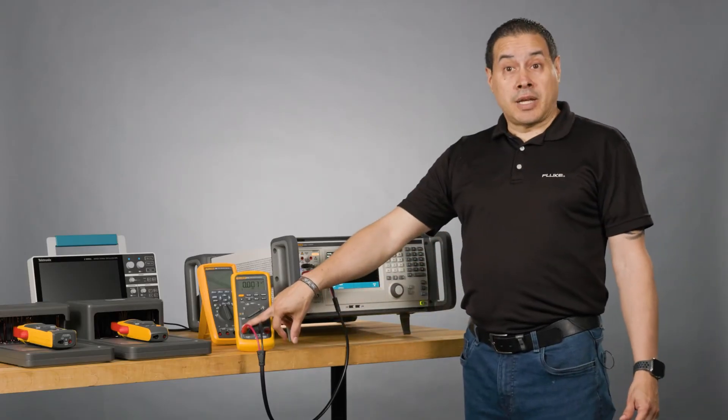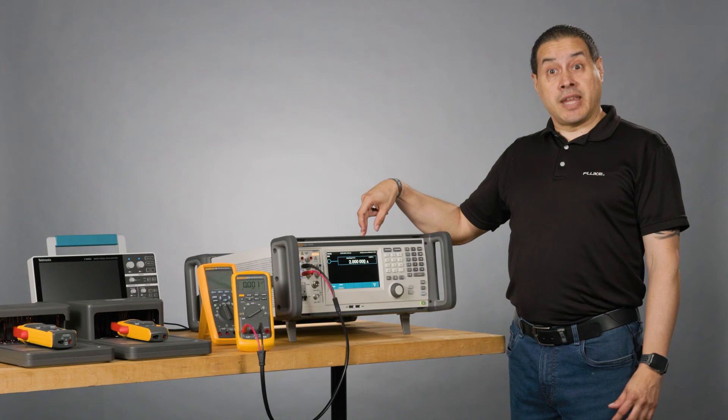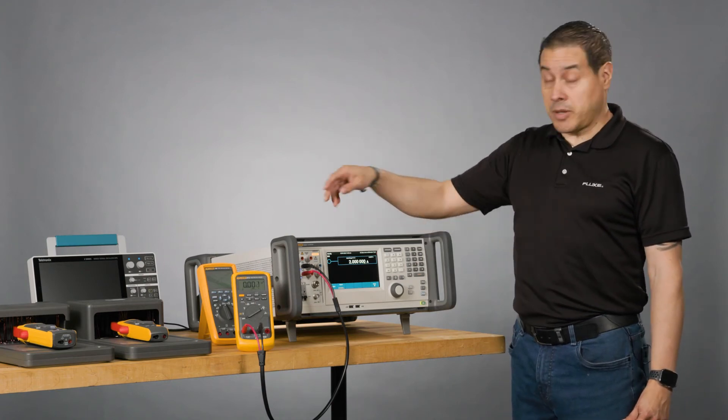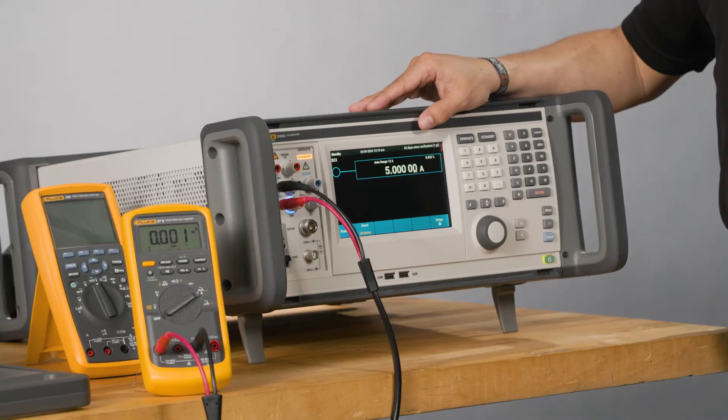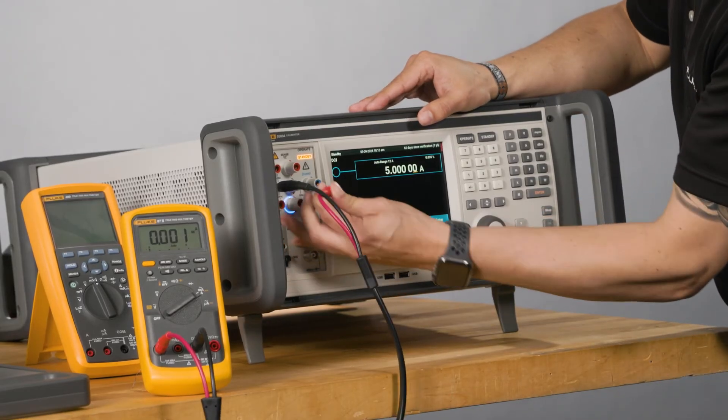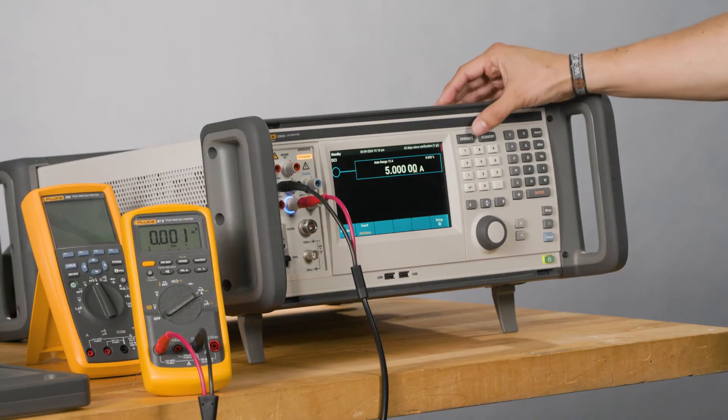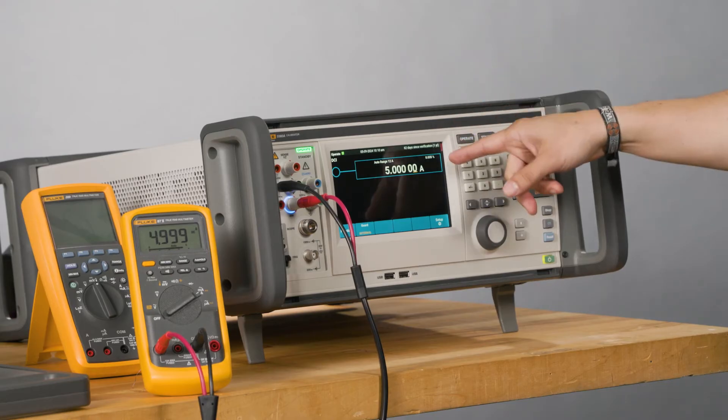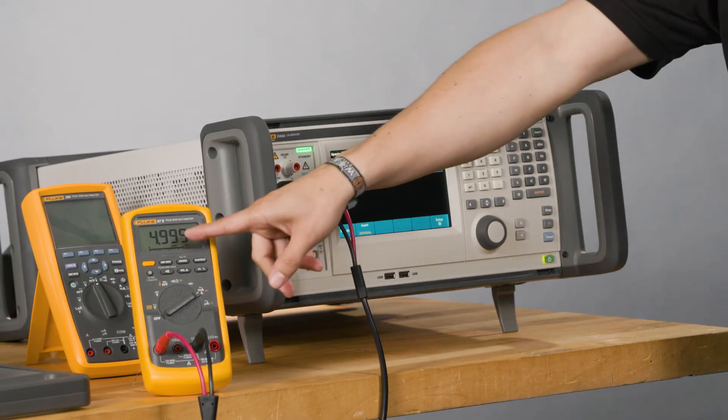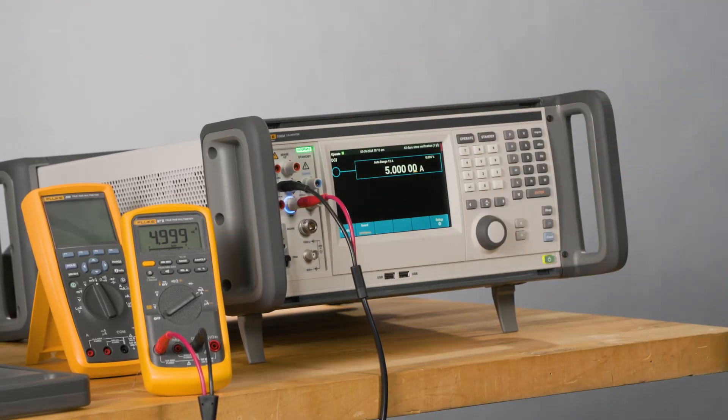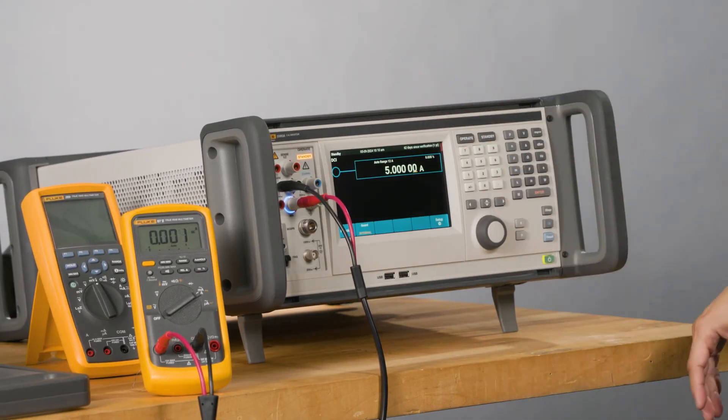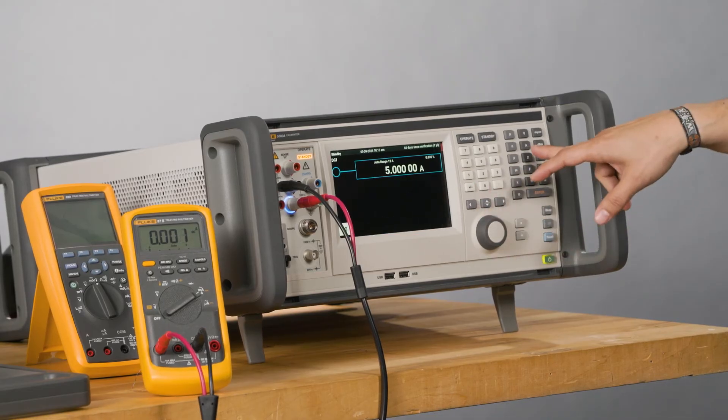This unit goes up to 10 amps. Be careful because this unit goes to 30 amps. Don't break it. If you exceed the current, you're going to be breaking the fuse. For five amps, I need to change the post here in my calibrator. And I sent five amps and I'm getting 4.999, which is common and good. I'll be doing more points up to 10 amps, which is the last one.